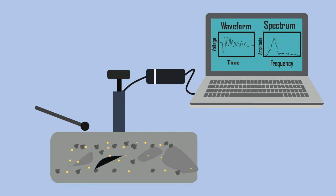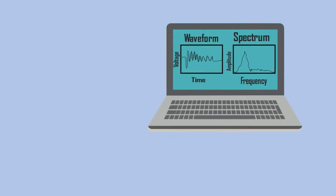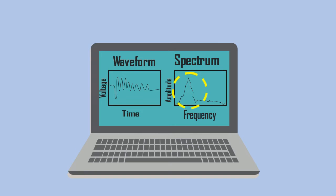The reflected waves are received by the transducer which converts the mechanical energy into the electrical signal. The electrical signal is converted into two graphs, namely waveform and spectrum, which are plotted on the screen. The frequency peak in the spectrum provides information about the thickness of the structure, its integrity, and the location of flaws.